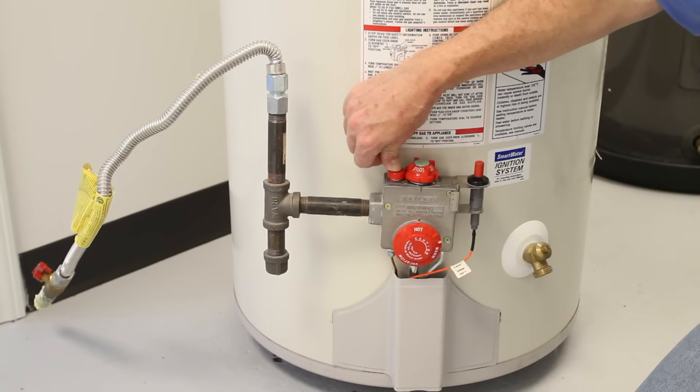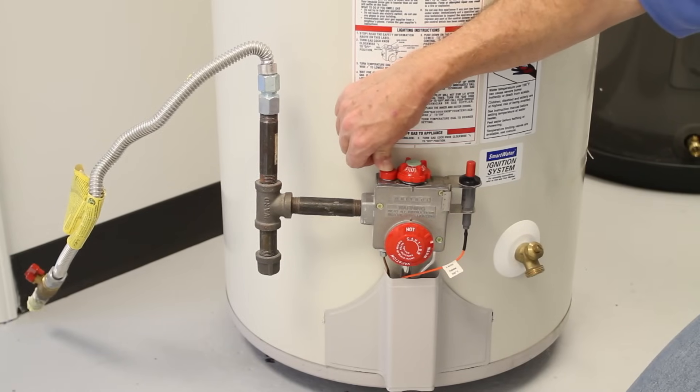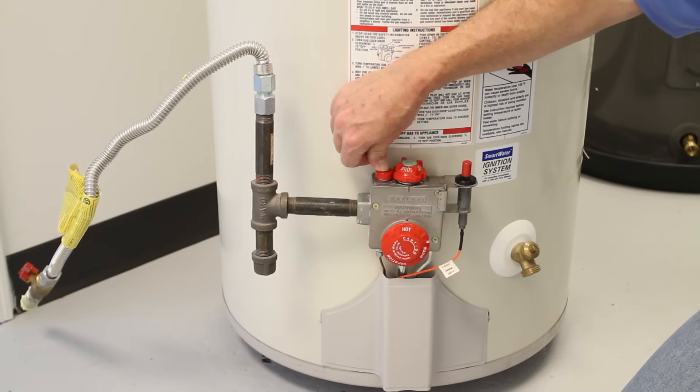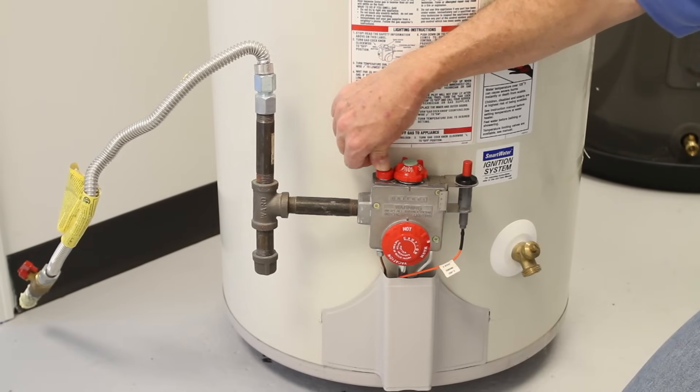What's going on here is when the pilot light goes off, the supply of gas to the pilot light must go off as well. Otherwise, your house will fill with gas.